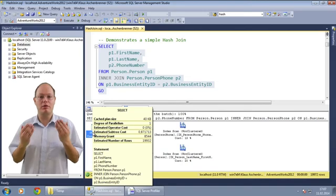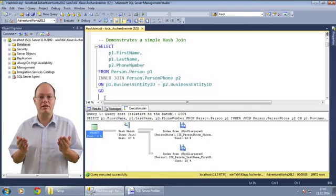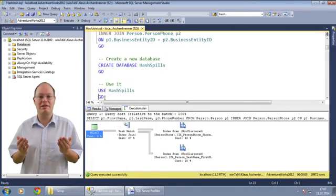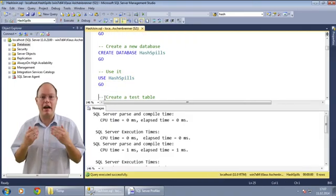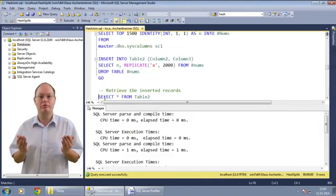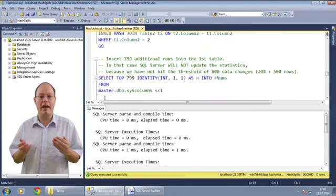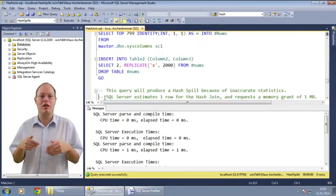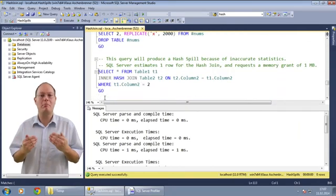In the next step, I want to show you with another example how inaccurate statistics can lead to a hash spill in SQL Server. As you have seen by now, a hash join has to acquire a memory grant. That memory is used to create the needed hash table in memory.